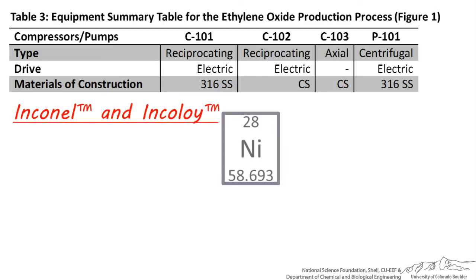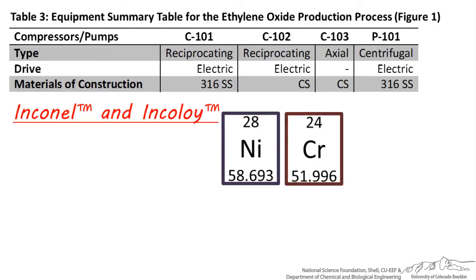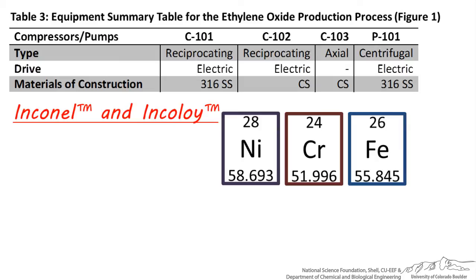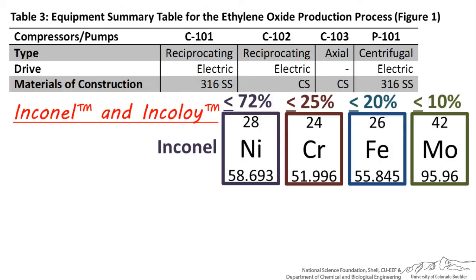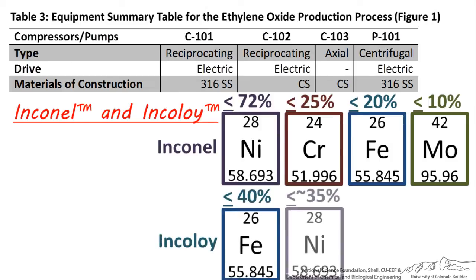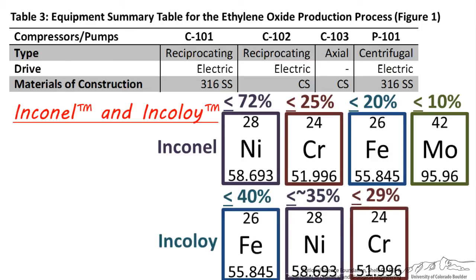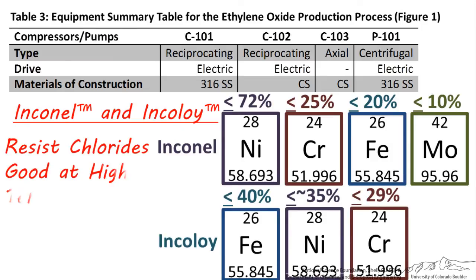Inconel and Incoloy are mostly nickel, with up to 30% chromium, as much as 40% iron, and up to 10% molybdenum, among other metals and nonmetals. The difference between them is that Inconel is up to 72% nickel, up to 25% chromium, and up to around 20% iron, while Incoloy has less nickel but more iron. Both Inconel and Incoloy are good to use at high temperatures and with chloride-containing chemicals.